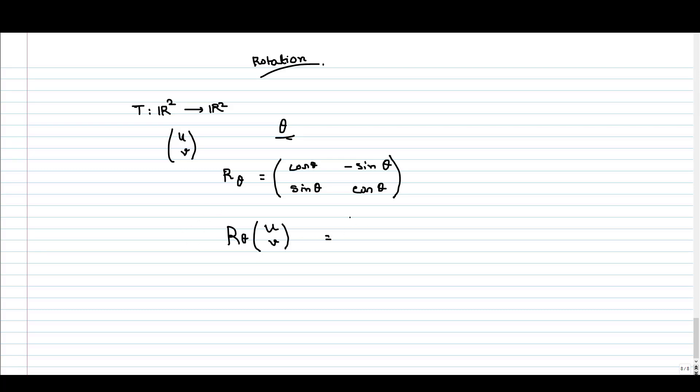We get cos θ, -sin θ, sin θ, cos θ into the column vector (u,v). What we get here: we get u cos θ - v sin θ and u sin θ + v cos θ. This will be the image of the vector in two-dimensional plane.